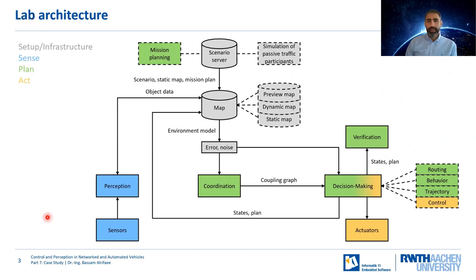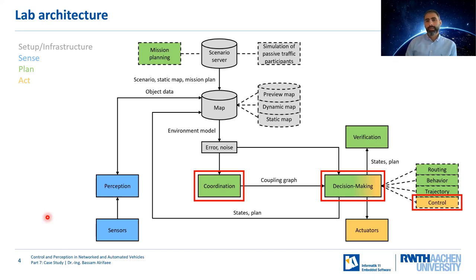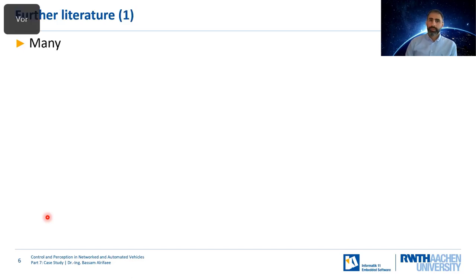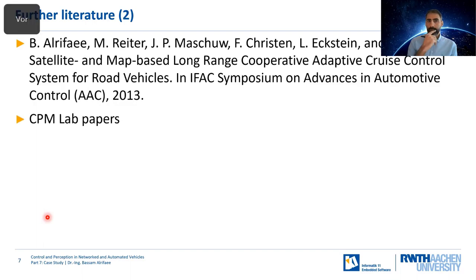Looking at the lab architecture again, the case studies are related to coordination, decision-making, and control. We will look at coordination of two, three, or four agents today on decision-making and control using MATLAB as a programming language. The case studies are taken from the source 'Vehicle Dynamics and Control' by Rajamani. Some of the controllers I'm going to show you today I have already published some years ago in a paper — if you want to read more details, you will find them there, and also in the CPM lab papers.